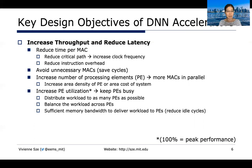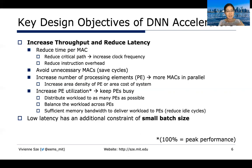Strategies to increase utilization include distributing the workload to as many PEs as possible and making sure the workload is balanced — if too much work is on one processing element, that becomes the long pole limiting throughput. You also need enough memory bandwidth to deliver data to the processing elements so they're not idle waiting for data. Low latency is an additional challenge, requiring a small batch size. Running larger batch sizes amortizes data loading costs for high throughput, but batching more data increases your latency — that's the tension between latency and throughput.